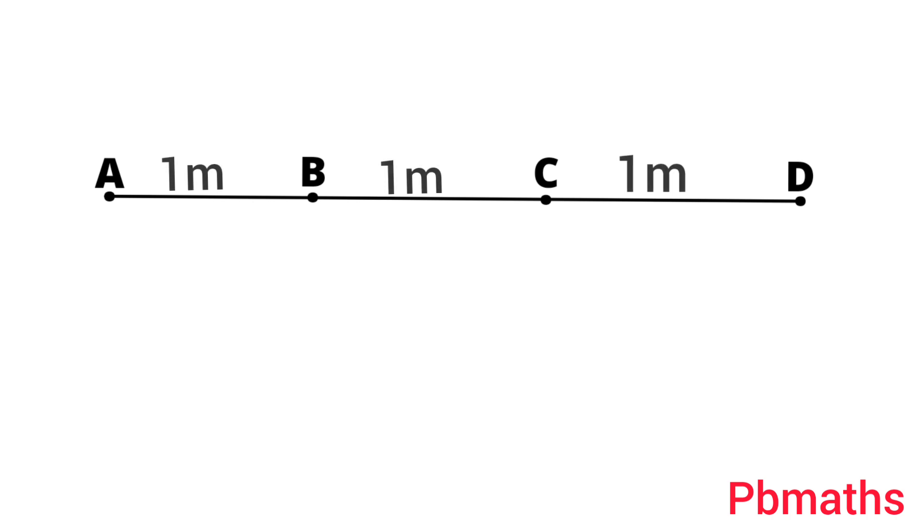For points A, B, C and D lie on a single straight line, each are 1 meter away from each other.